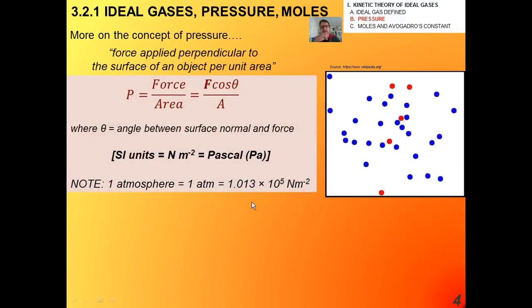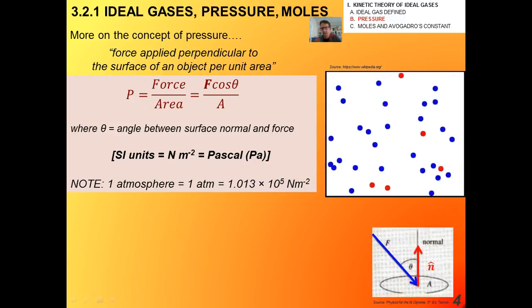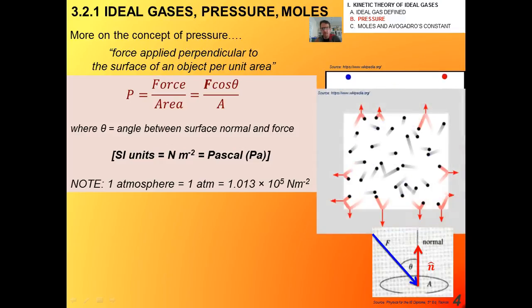Alright, so a little bit more on the concept of pressure. When I say that it's a force applied perpendicularly to the surface of an object per unit area, what I really mean is that it's F cosine theta over the area, where theta is the angle between the surface normal and the force. Remember when we studied dynamics or statics and Newton's laws and so forth, and we talked about perpendicular forces and so forth. So again, the SI units are Newton's per square meter. That's a Pascal. And I want you to know that there's another very common, when we're talking about gases, there's another common unit, and that is an atmosphere. And what an atmosphere is, is the average pressure at sea level on the surface of the Earth, and that's about 1 times 10 to the 5th Pascals. Alright, so again, here's your unit normal vector. Here's your force coming in. So the component that's acting perpendicularly is F cosine theta.